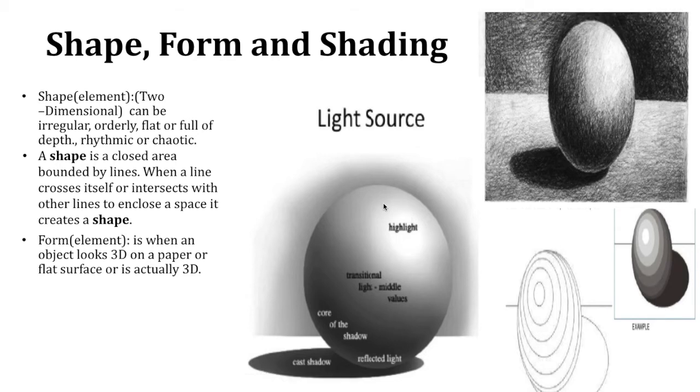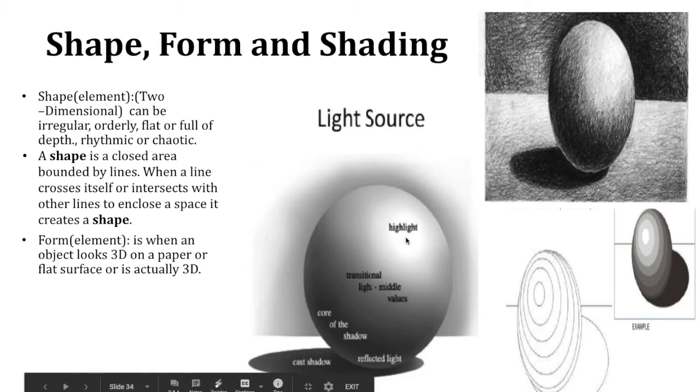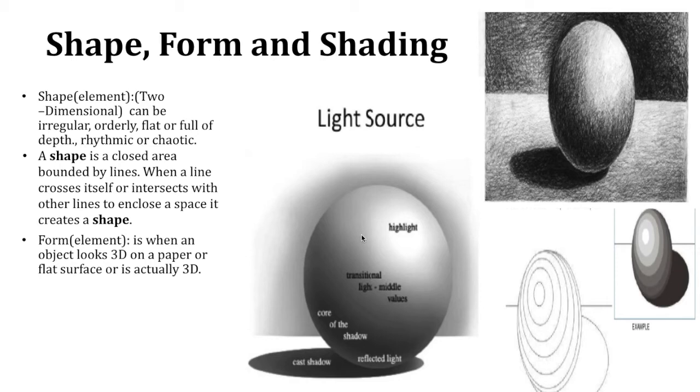So you're going to practice first with a sphere. You're going to draw a sphere just like this into your process journal. So in the sphere, I want you to have the highlight, which is the lightest color on that value scale that I showed you.